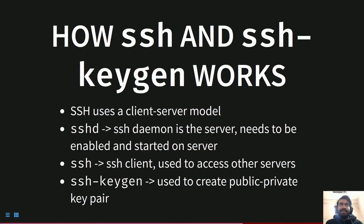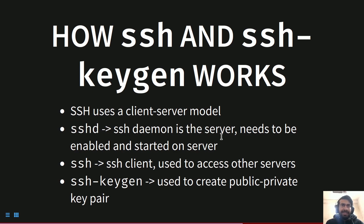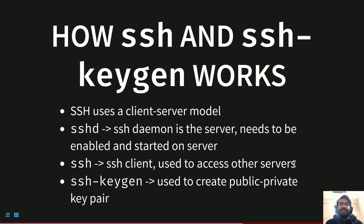To use SSH, there are two main commands: ssh and ssh-keygen. SSH uses a client-server model — one computer acts as the server and another as a client. On the server, a daemon called sshd (SSH daemon) must be enabled and started; it is not started by default. On the client side, we simply use the ssh command to access the server at any time without needing to enable anything.